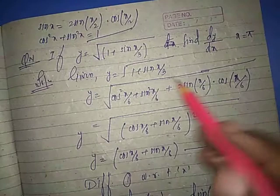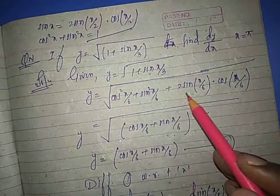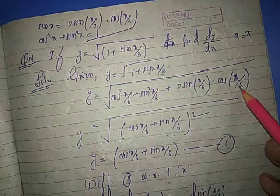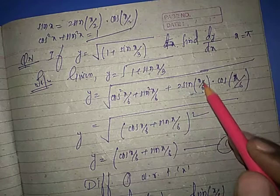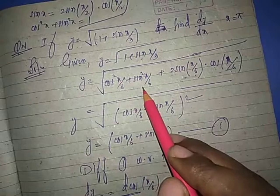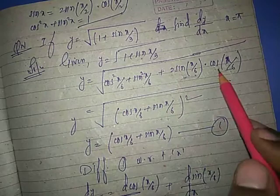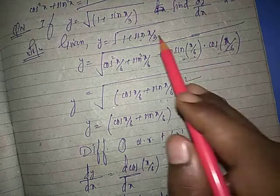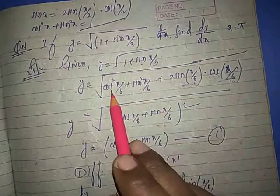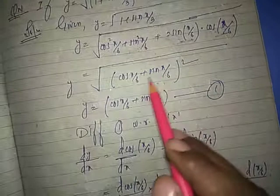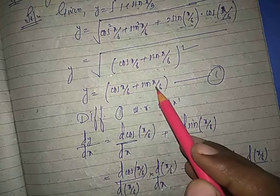Using trigonometric identities, sin x equals 2 sin x by 6 cos x by 6. We can write this as cos square x by 6 plus sin square x by 6, which equals 1, plus 2 sin x by 6 cos x by 6. This becomes the formula a square plus b square plus 2ab, which is a plus b whole square. Taking the square root, y equals cos x by 6 plus sin x by 6.